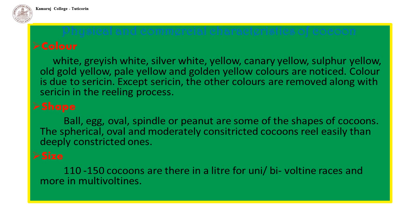Physical and commercial characteristics of cocoons: Color is a racial character. The following colors have been noticed in cocoons — white, grey-white, silver white, yellow, canary yellow, sulfur yellow, old gold yellow, pale yellow, and golden yellow. Color is due to pigments. Except for white, the other colors are removed along with sericin during the reeling process.